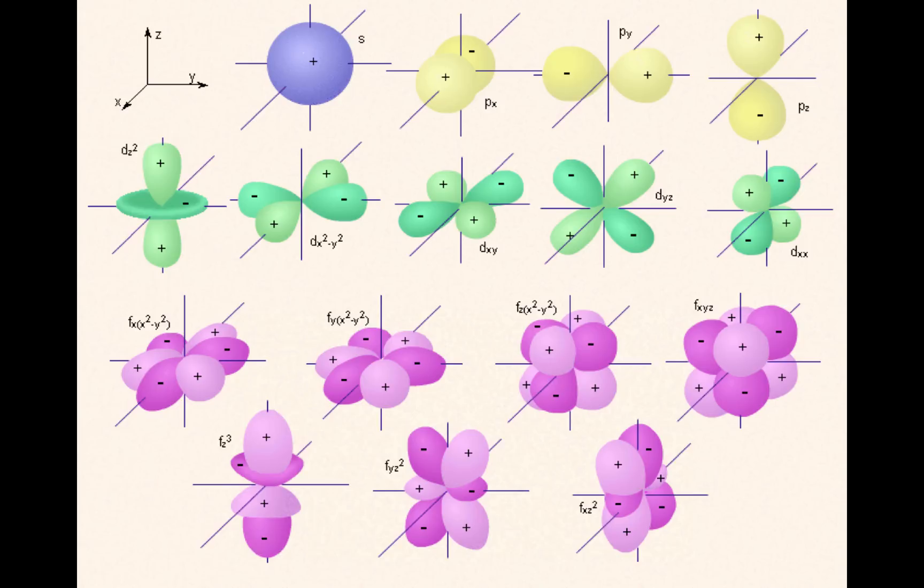This picture shows you the shapes of S, P, D, and F orbitals. You will only have to remember that S is a sphere and P is a dumbbell.